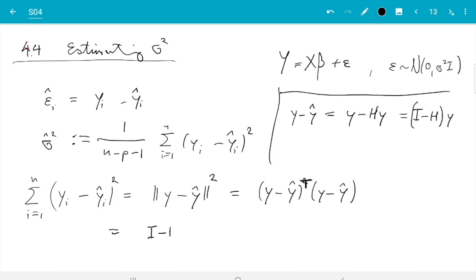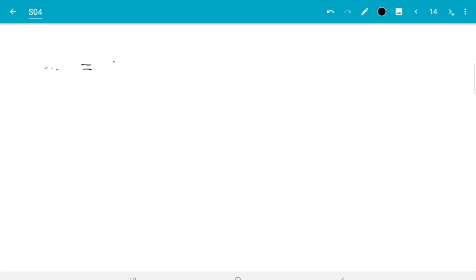So we have identity minus hat matrix y transpose. I made a mistake here earlier. I fixed it. Times identity minus h y is y transpose identity minus h transpose identity minus h y. And you will recognize this from the section about the hat matrix. First, we don't need this transpose. So we have y transpose identity minus hat identity minus hat y. And then we showed that's idempotent. So we have y transpose identity minus h y. So that's using the rules for the hat matrix.